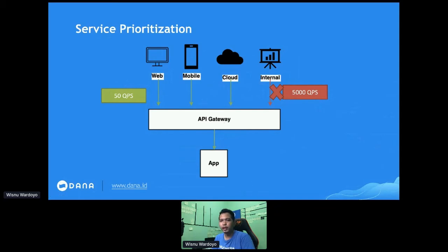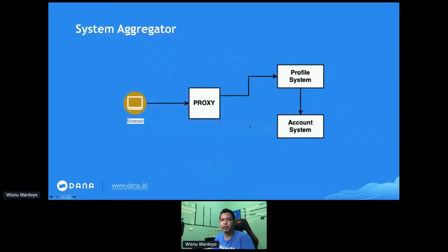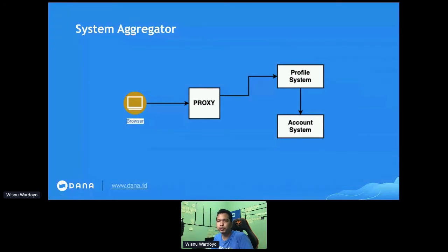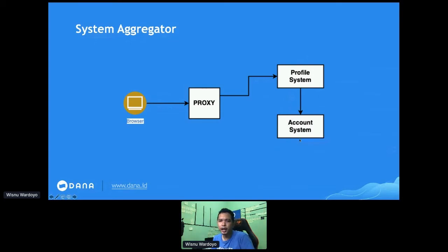The next problem that can be solved by the API Gateway is the system aggregator. When developing an API, there are times when we need to serve a client application with data provided by different systems. For example, in an e-wallet application, an API to return user data — such as name, gender, and profile picture — alongside the user's current balance.